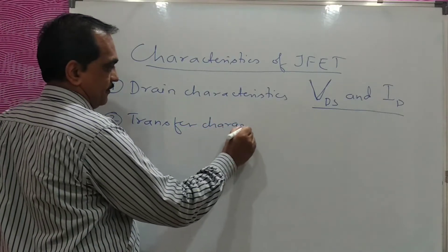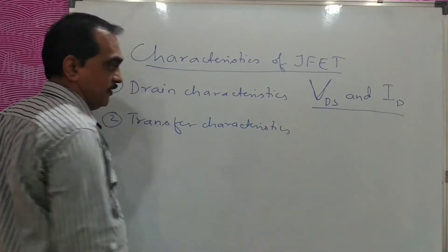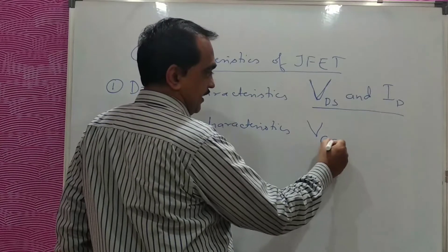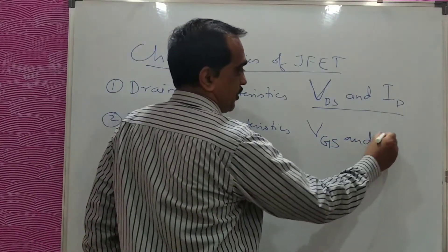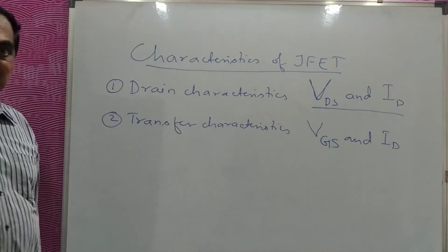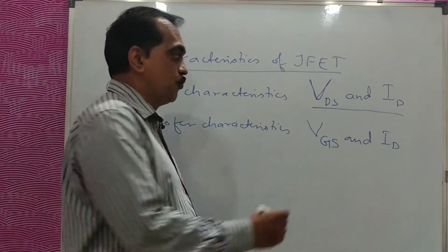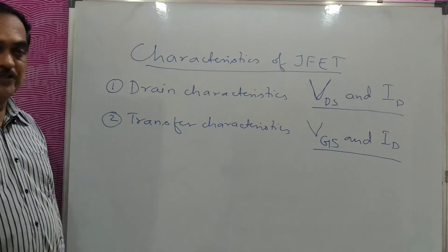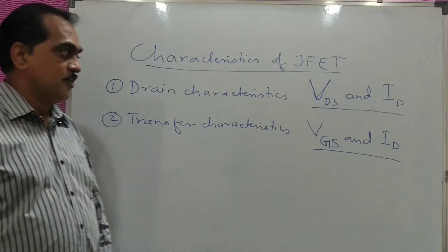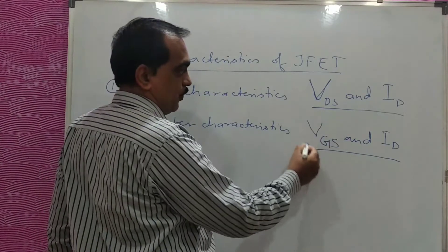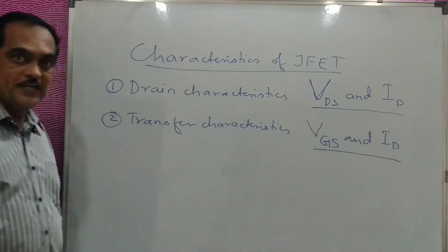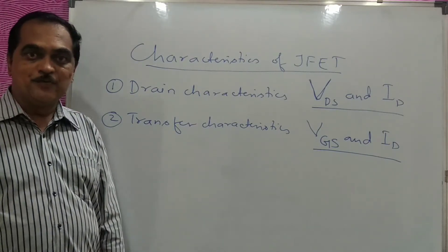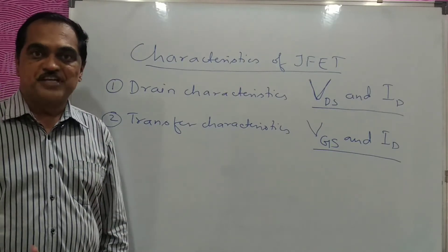The second type is Transfer Characteristics, which is a relationship between input voltage — between gate and source — and output current, the drain current. It is a graph of input voltage versus output current for a constant output voltage. So if you vary the input voltage, the output current varies accordingly. These are the two types of characteristics we will study one by one.